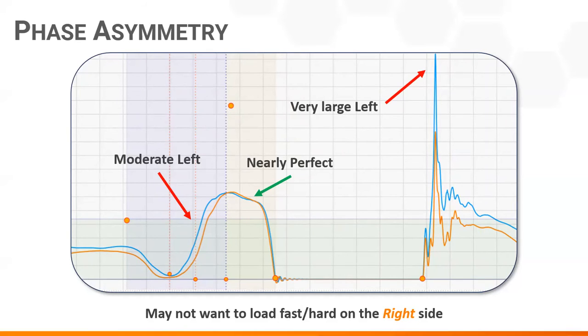Plus there's a proprioceptive and afferent feedback demand that has to coordinate a safe and effective landing. So the stakes are higher in the landing phase, and so that's probably why the asymmetry is exacerbated there.